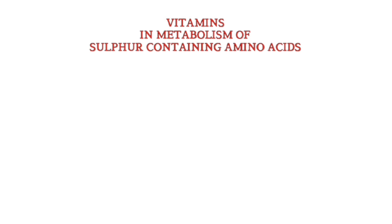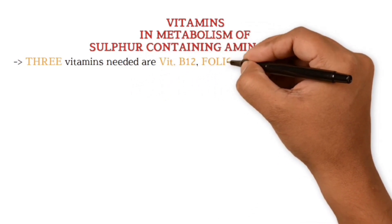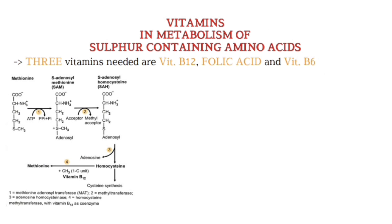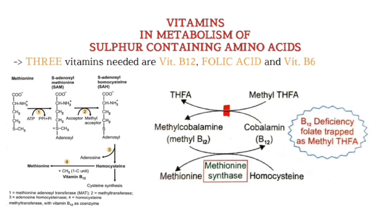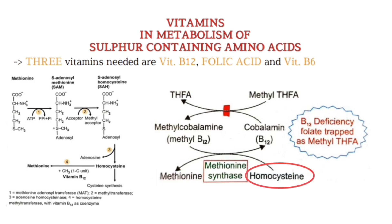Now we will see the role of vitamins in methionine metabolism. Three vitamins are needed: vitamin B12, folic acid, and vitamin B6. In vitamin B12 deficiency, the conversion of N5-methyl tetrahydrofolic acid to tetrahydrofolic acid is blocked. This is the only reaction in which free tetrahydrofolic acid is released. Most body folate will be trapped as N5-methyl tetrahydrofolic acid in B12 deficiency, and this is called the folate trap. So homocysteine cannot be converted to methionine, hence homocysteine accumulates, and it is a risk factor for acute coronary syndrome.